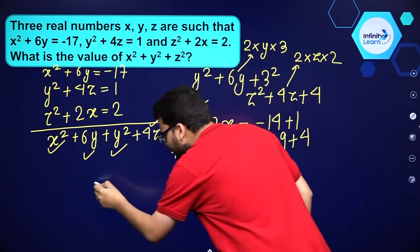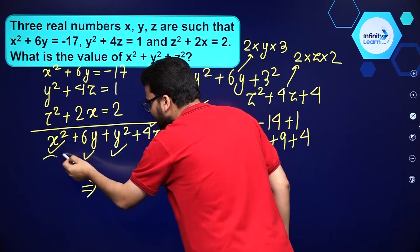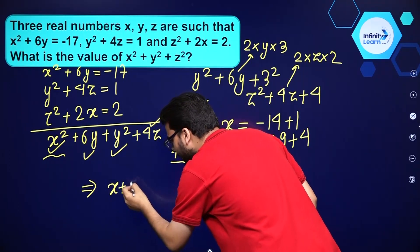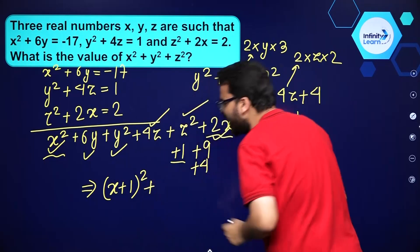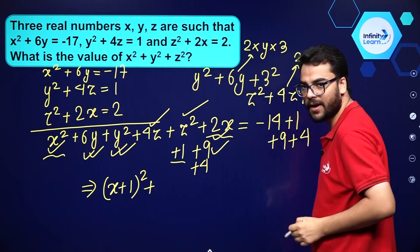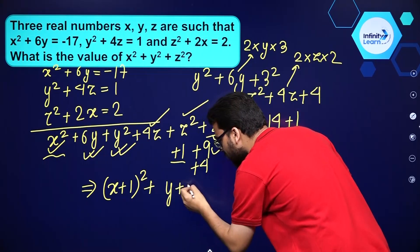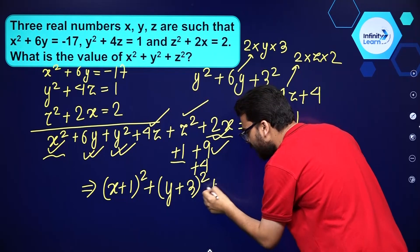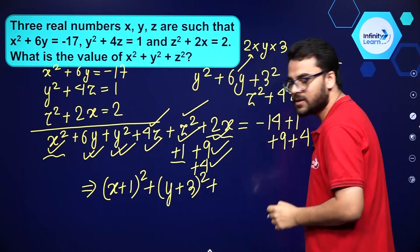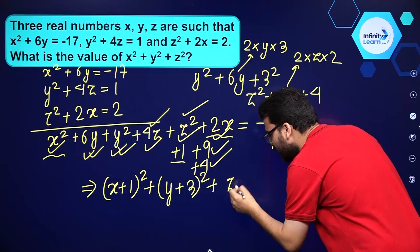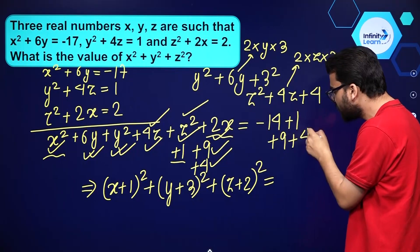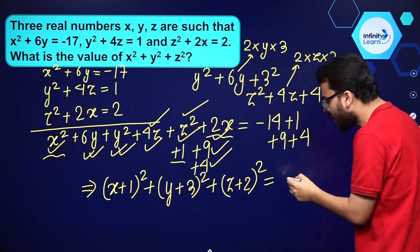So on the left hand side, we have got x square plus 2x plus 1, which gives us (x plus 1) whole square. In the same manner, y square plus 6y plus 9 gives us (y plus 3) whole square. And z square plus 4z plus 4 gives us (z plus 2) whole square. On the right hand side, 9 plus 4 is 13 plus 1 is 14, so 14 minus 14 is 0.